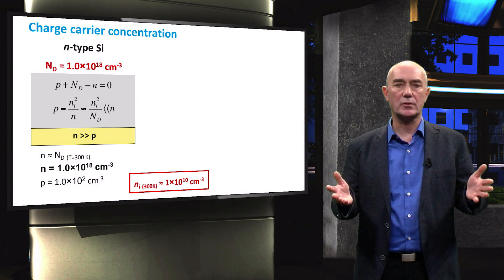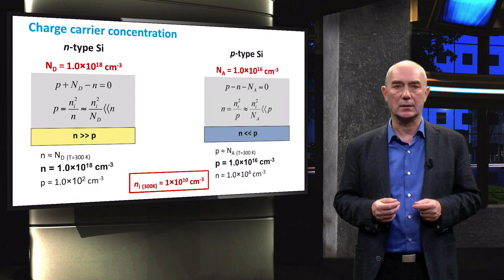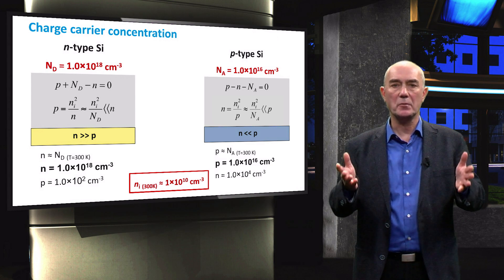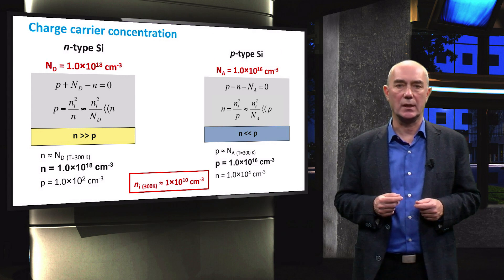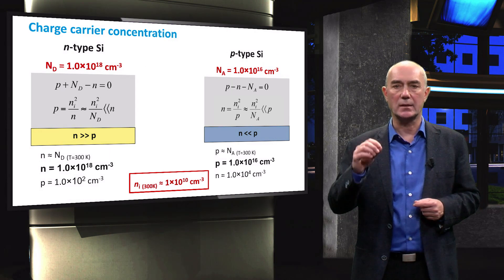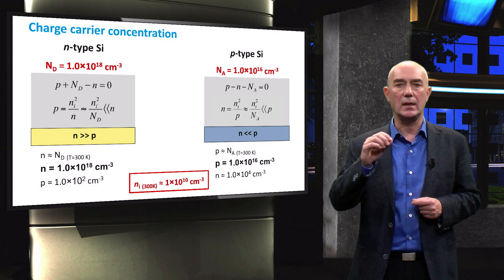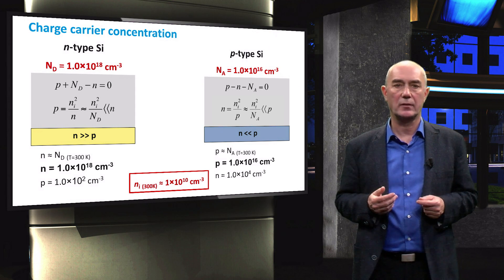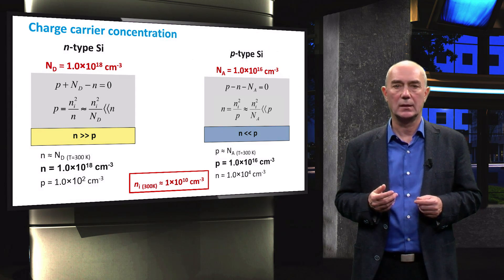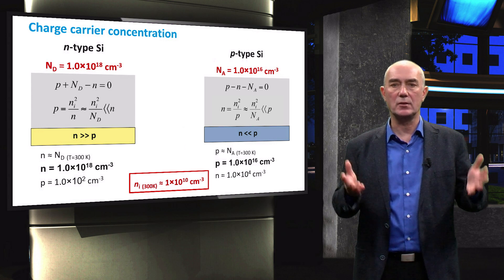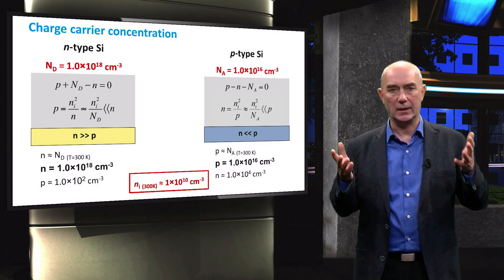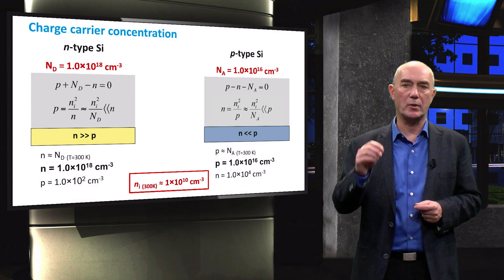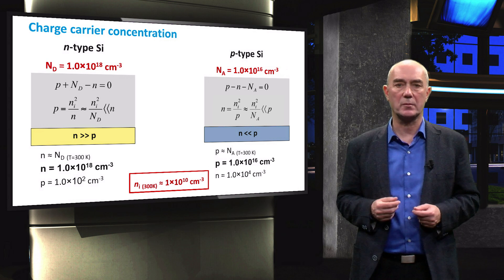We can do the same calculation for a P-type semiconductor with a given acceptor concentration. The key difference now is that we set P equal to the acceptor concentration and solve N through the mass action law. This is because at room temperature all boron atoms are ionized and each boron atom contributes one hole.